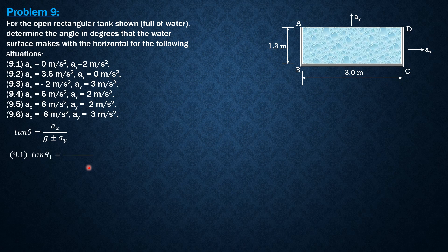So for number 1, tangent theta 1 is 0 over 9.81 plus 2. So since 0 over 11.81 is 0, theta 1 is 0. So meaning the water surface will remain horizontal or flat. There will be no liquid that will be spilled as shown.